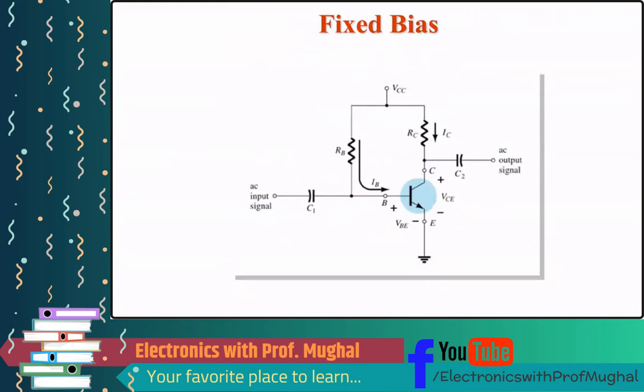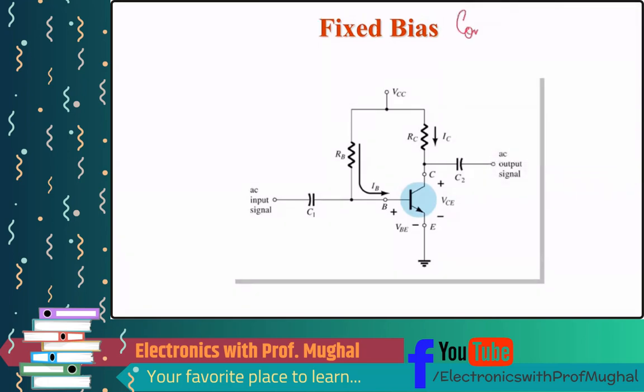Fixed bias. The first configuration is fixed bias. So let's see how a fixed bias circuit looks like. Fixed bias configuration. And for the most part, we are looking at BJTs here, right? BJTs, bipolar junction transistor.